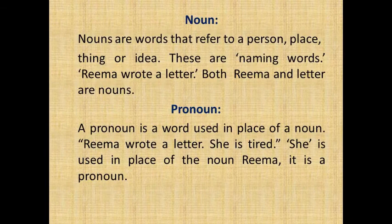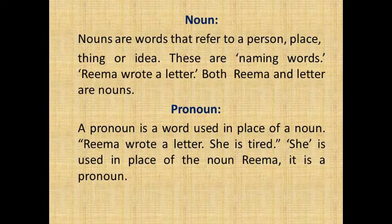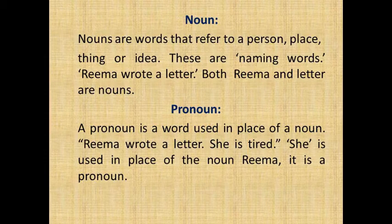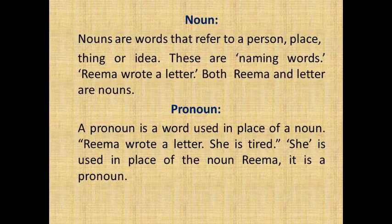Nouns are words that refer to a person, place, thing, or idea. These are naming words. For example: 'Rima wrote a letter' — both 'Rima' and 'letter' are nouns. A pronoun is a word used in place of a noun. For example: 'Rima wrote a letter. She is tired.' — 'She' is used in place of the noun 'Rima', so it is a pronoun.